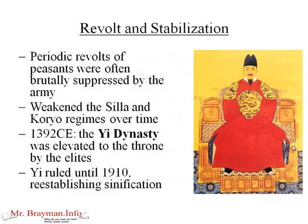Over time, the rulers of Silla became so invested in the elites and upper classes that peasants would revolt. These peasant revolts were brutally suppressed by the army, which demoralized the people and kept the civilization from going forward. Both the Silla and the Koryo regimes became weak and ineffective. In 1392, the Yi dynasty was elevated to the throne by the elites in a kind of democratic or parliamentary process, and the Yi ended up ruling until 1910. They reestablished Sinification but were cooperative enough with their peasants that they didn't face the same backlash the rulers of Silla did.